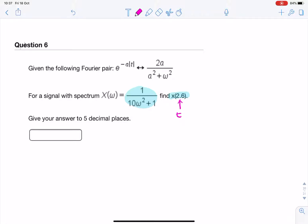So the question is, what is the signal that has a Fourier transform of 1 over 10 omega squared plus 1? So if you look at what we've been given and you look at that, they're similar but not the same.